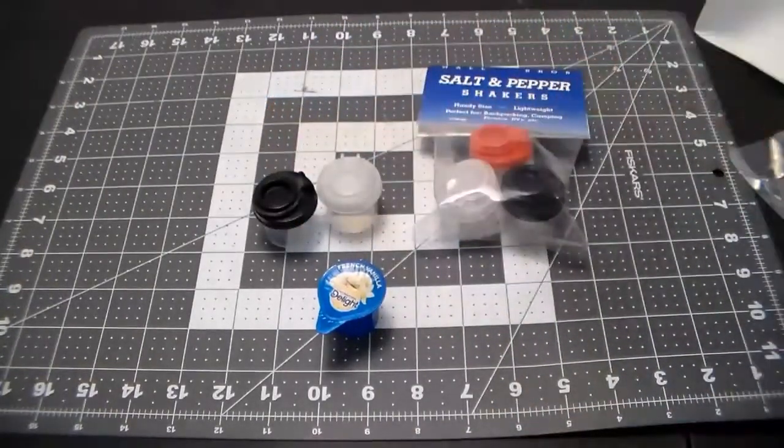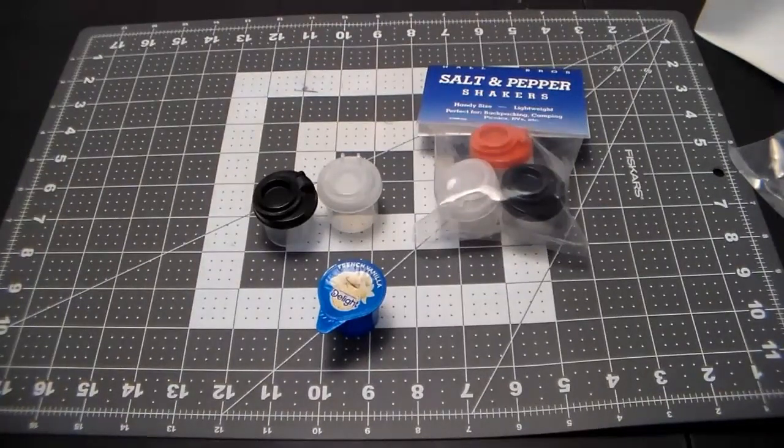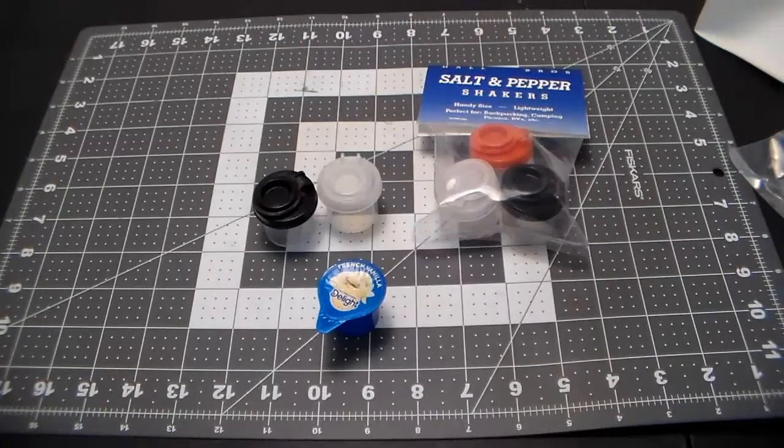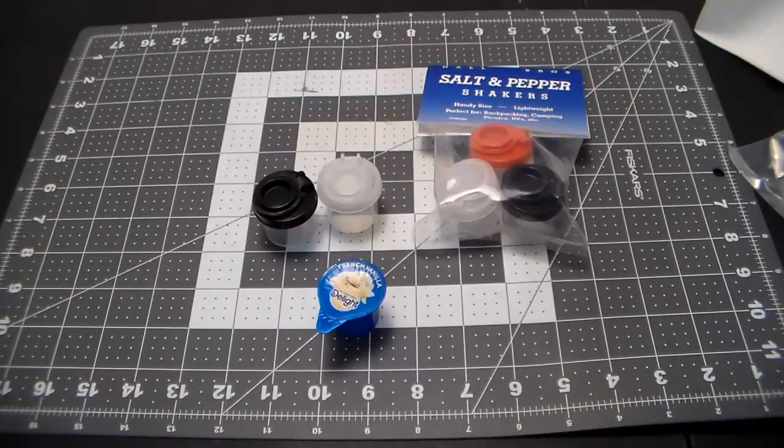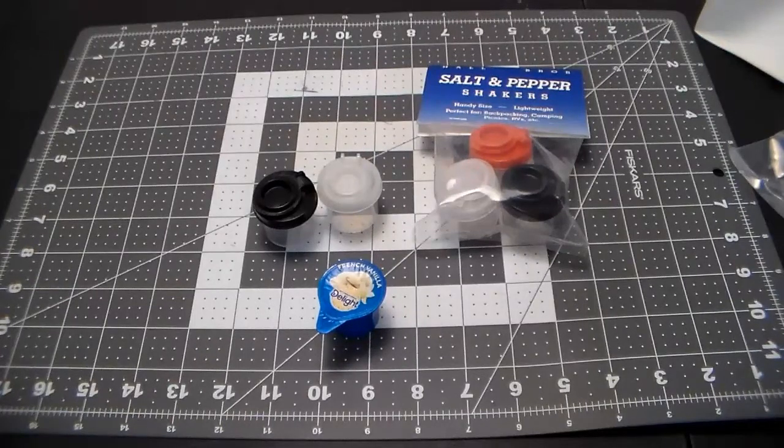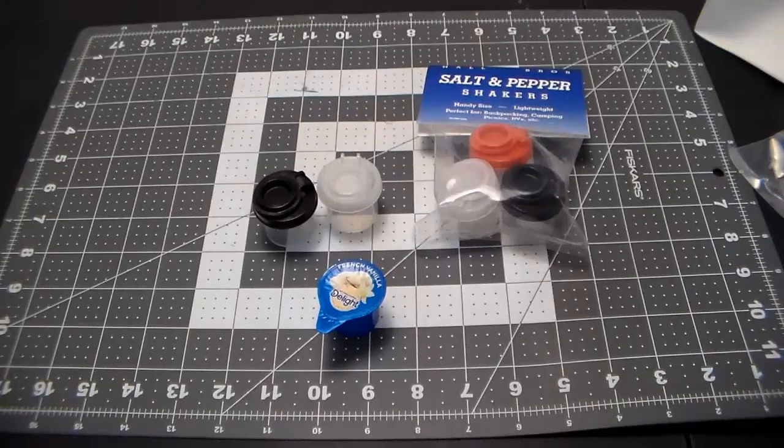I'm getting rid of those tic-tac containers mainly because after a while they become kind of fragile. I've ended up opening my mess kit a few times and found them broke, and then I got salt or pepper all over the inside of my mess kit. Lovely little mess, no pun intended.